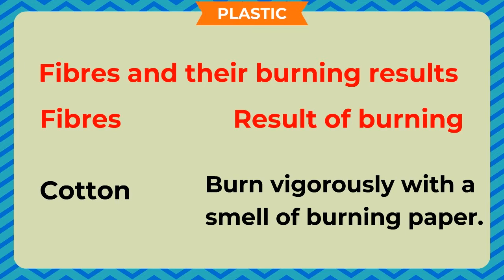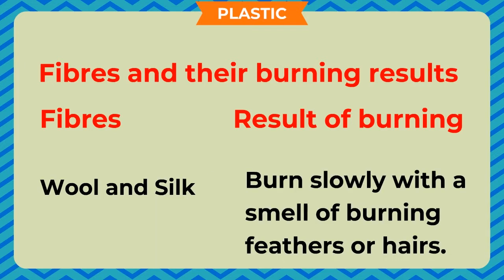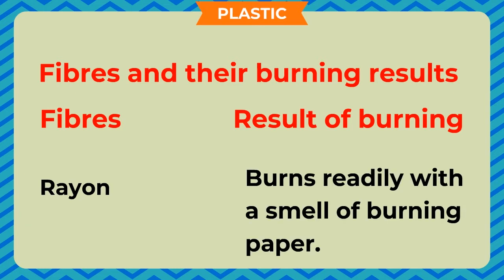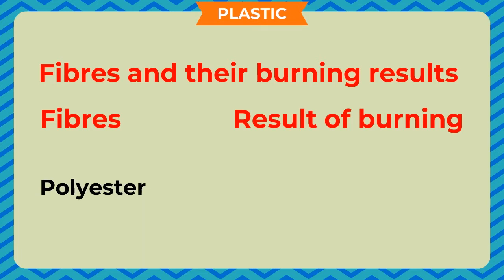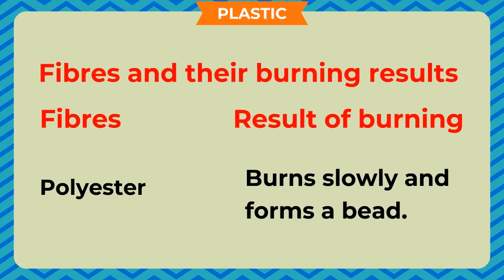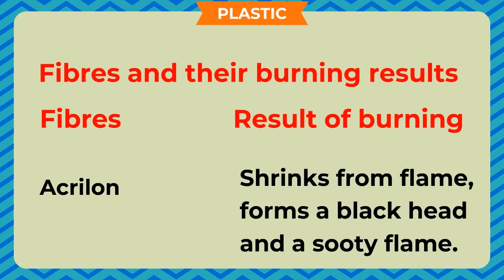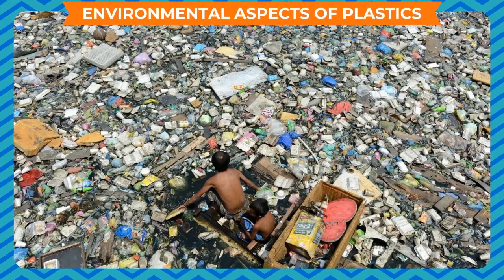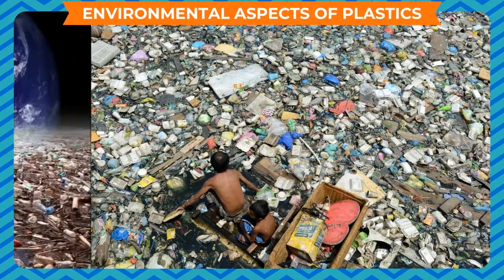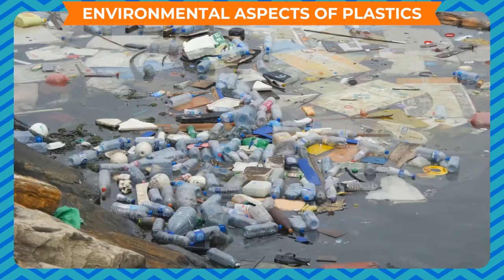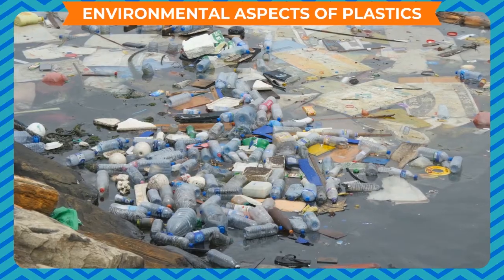Fibers and their burning results. Cotton — burns vigorously with a smell of burning paper. Wool and silk — burn slowly with a smell of burning feathers or hair. Rayon — burns readily with a smell of burning paper. Polyester — burns slowly and forms a bead. Acrylon — shrinks from flame, forms a black bead and a sooty flame.